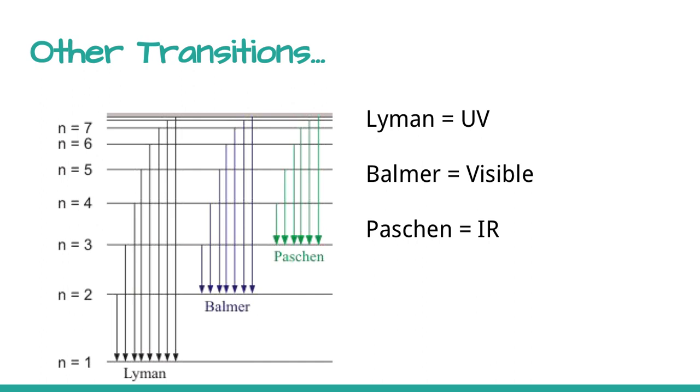You might be wondering, these are transitions back down to n equals two, but doesn't hydrogen have its electron at n equals one? It does. What happens when you have all of this hydrogen in a gas discharge tube and you're applying a high voltage to it is you're exciting lots of electrons in lots of different atoms across the board. What results is tons of different transitions between the different energy levels.